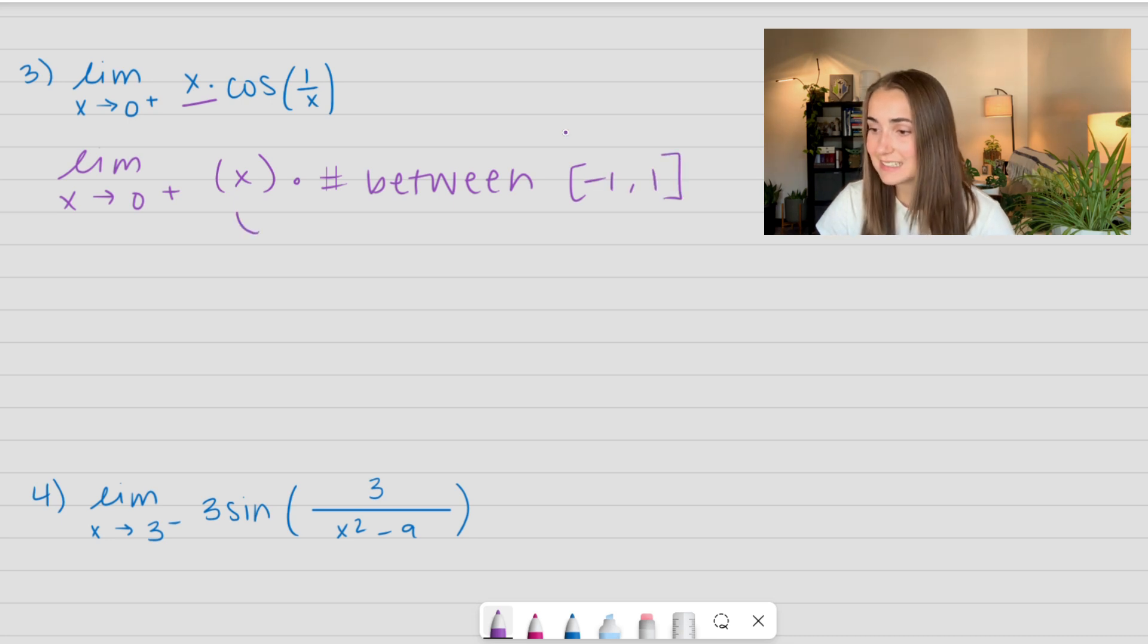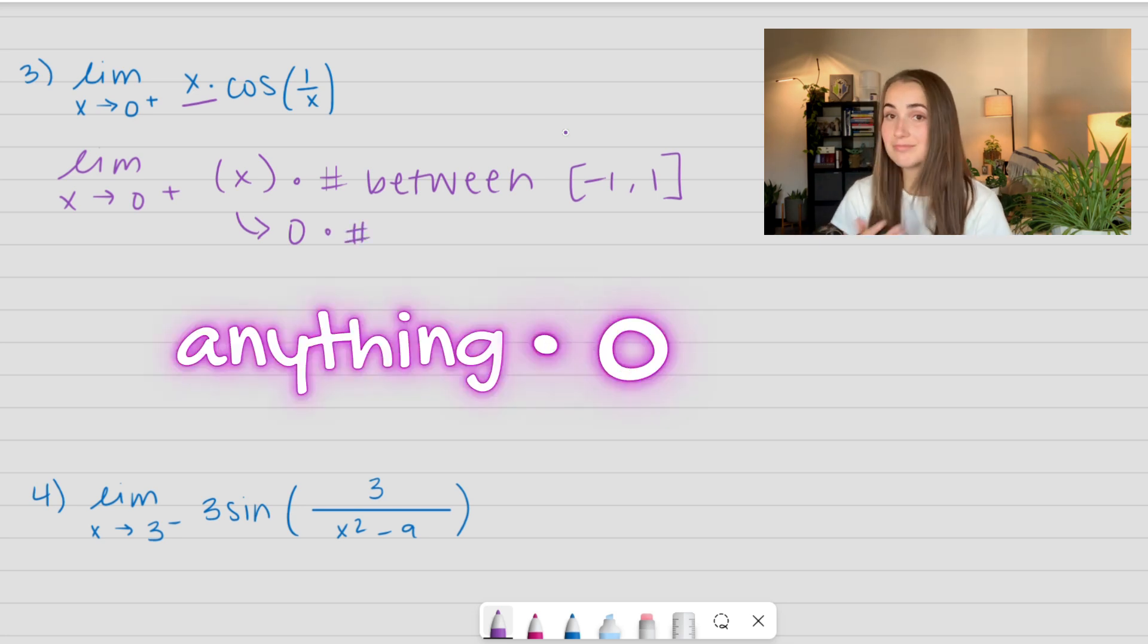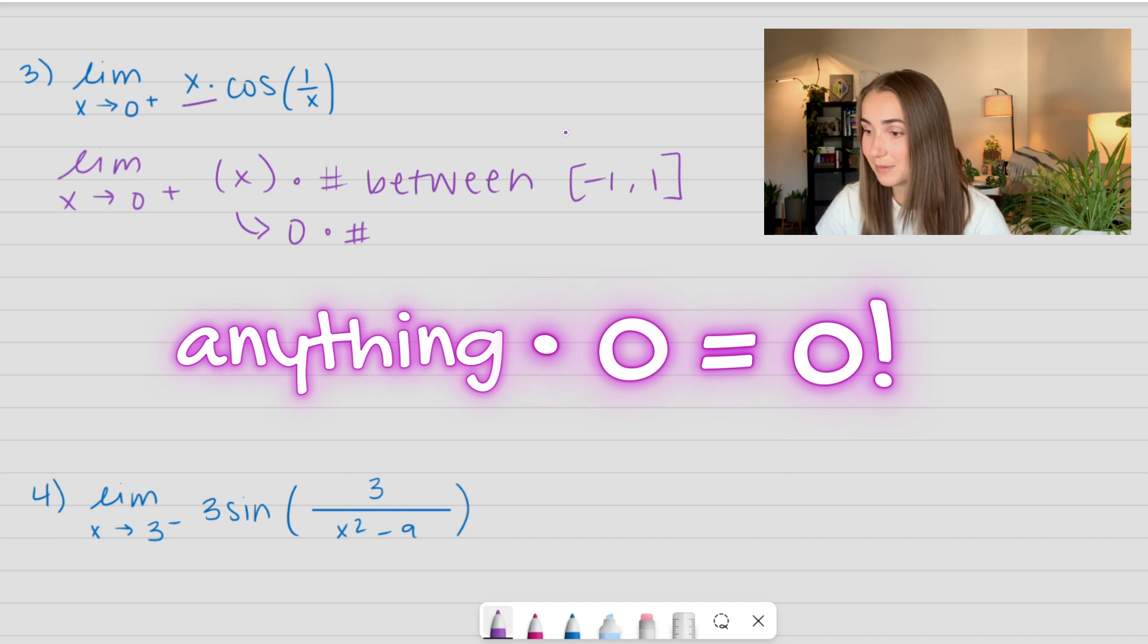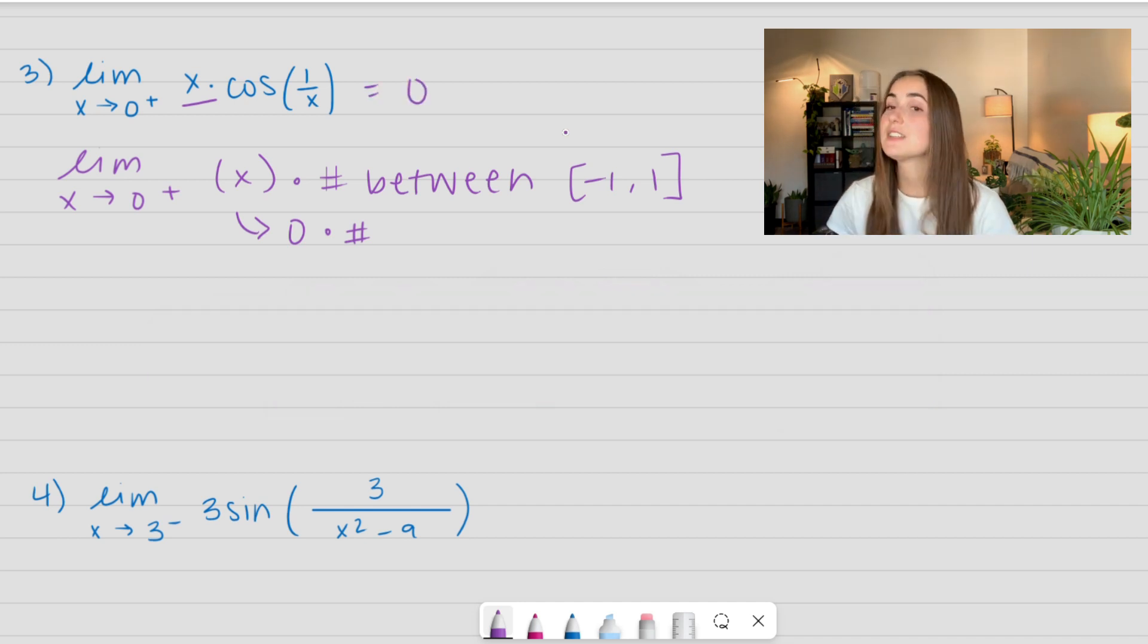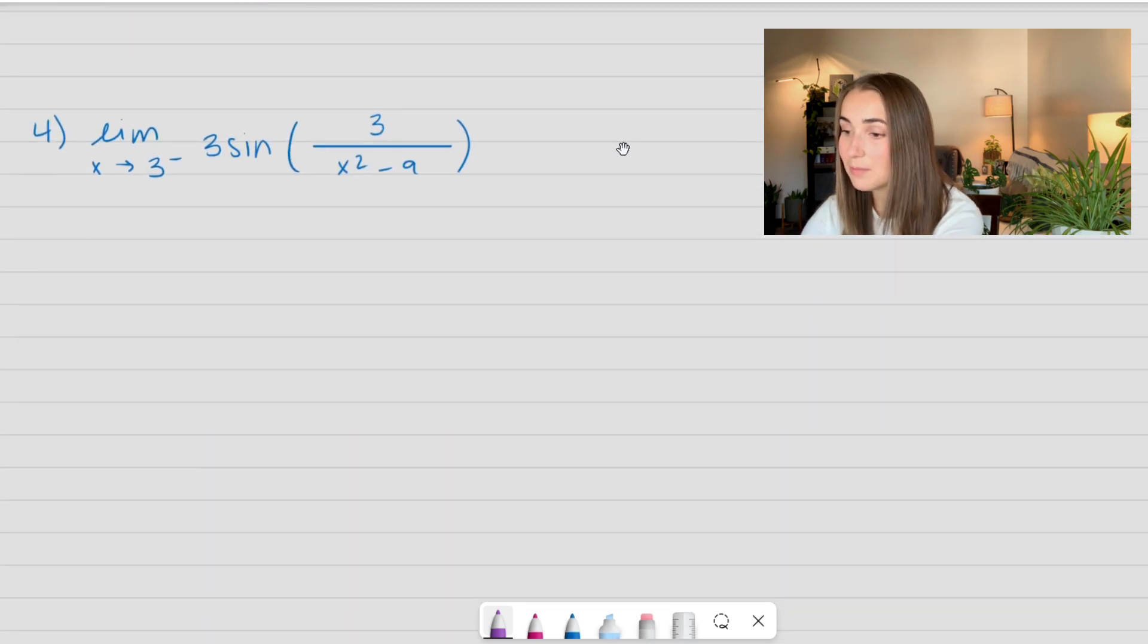Except this x is approaching 0. So this is like 0 times some number. Whenever you multiply anything times 0, it equals 0. So this limit is actually going to go to 0. So we have an oscillating function times a linear function. And when it goes to 0, that 0 is going to be stronger.